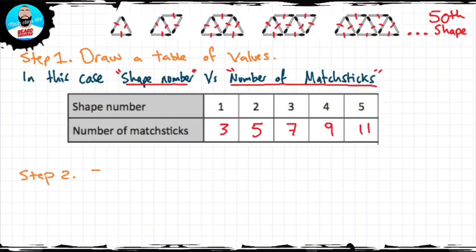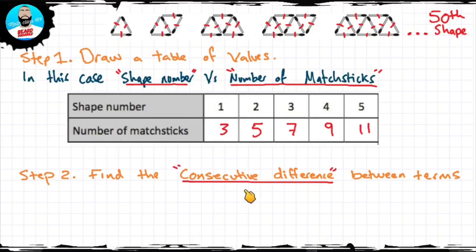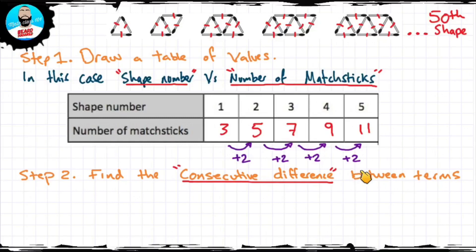Step 2: we need to find the consecutive difference between terms. Consecutive means following one after the other continuously. So shape 1, shape 2, shape 3, shape 4, shape 5. Between 3 and 5, that's plus 2. Between 5 and 7, it's plus 2. Between 7 and 9, you're adding 2. And from 9 to 11, you're adding 2 again. So our consecutive difference between terms is plus 2.